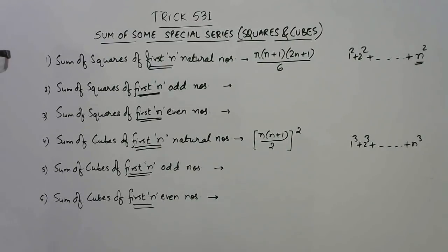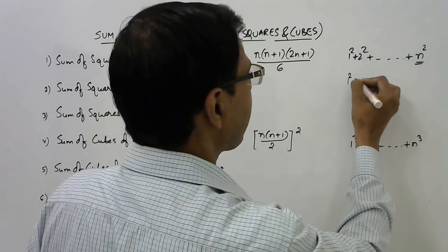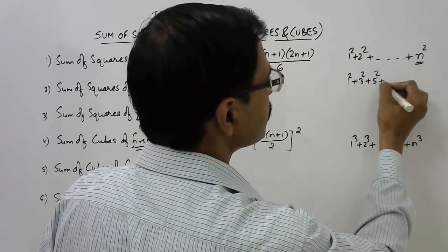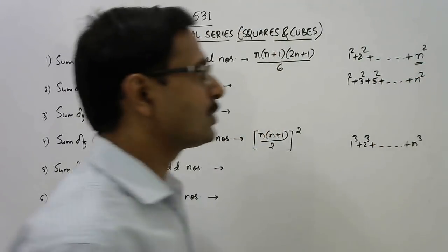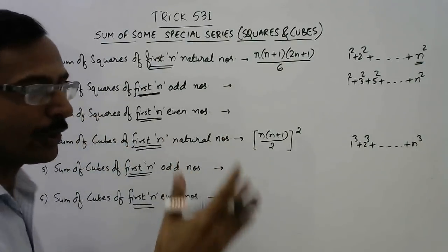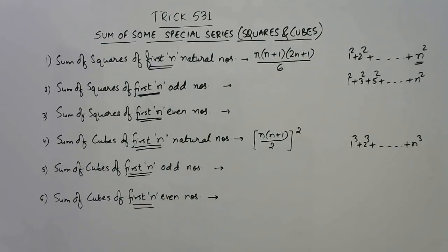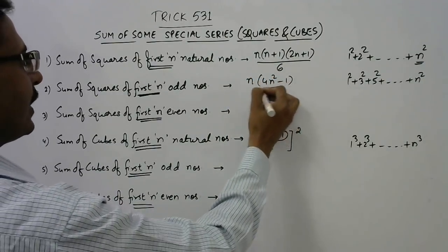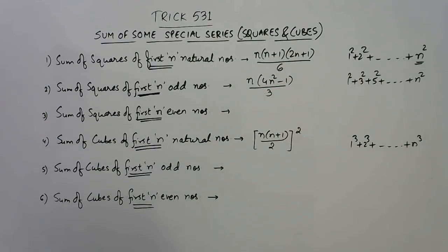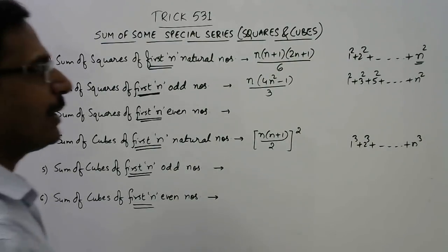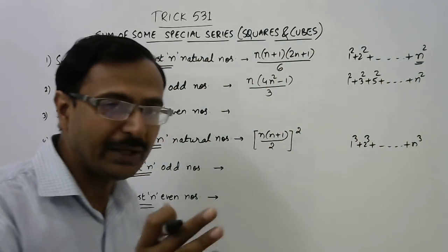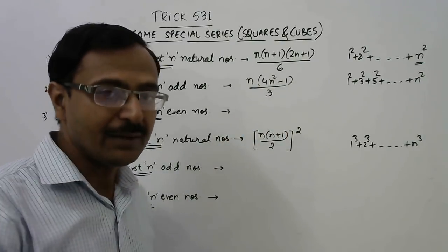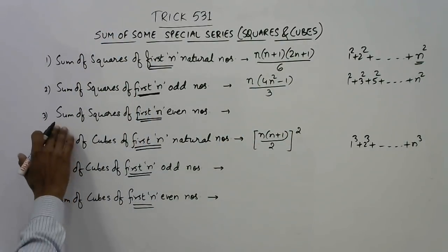For the sum of squares of first n odd numbers — that is 1² + 3² + 5² and so on — if you need the sum of squares of the first 10 odd numbers then n equals 10, first 20 odd numbers then n equals 20. Just substitute the value of n in the formula n(4n²−1)/3 and you will get the answer. You can verify this by finding the sum manually and comparing.